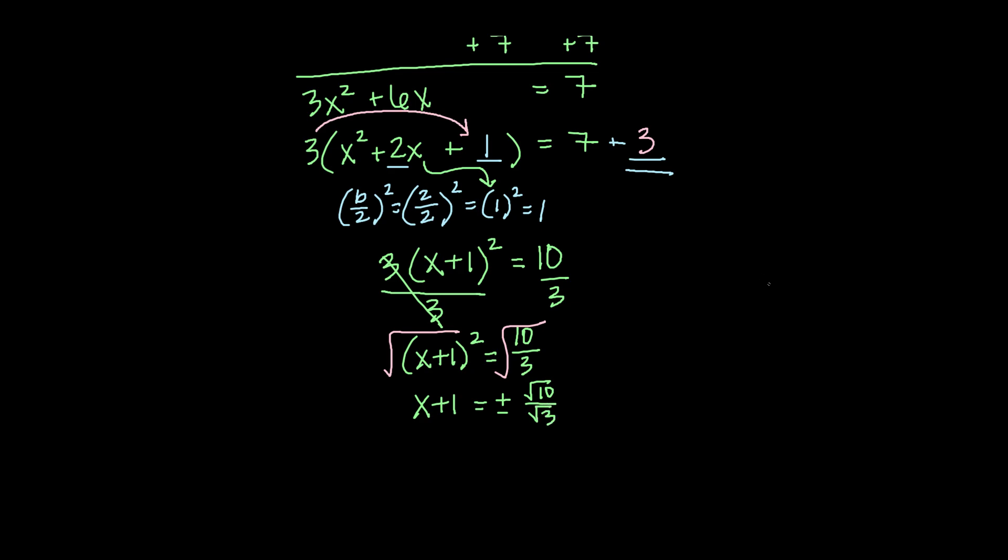Now we know that we don't like to leave square roots in our denominator. So let's go ahead and rationalize that. Square root of 10 over square root of 3. To rationalize that, we're going to multiply by square root of 3 over square root of 3. So that becomes the square root of 10 times 3, or 30, divided by the square root of 9, which we know is just 3. So we get the square root of 30 over 3.